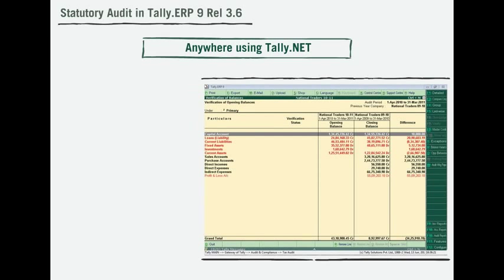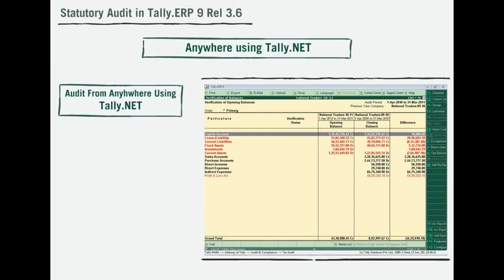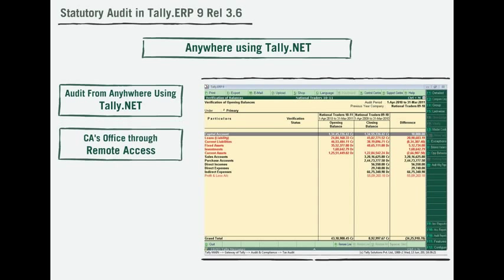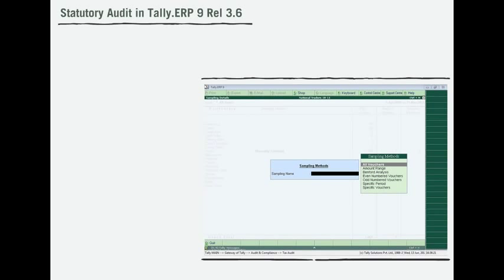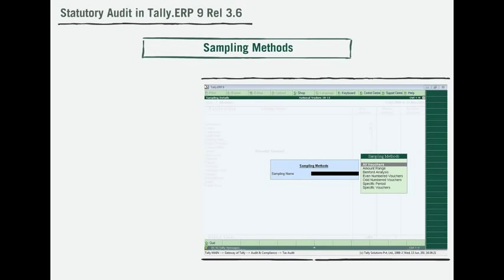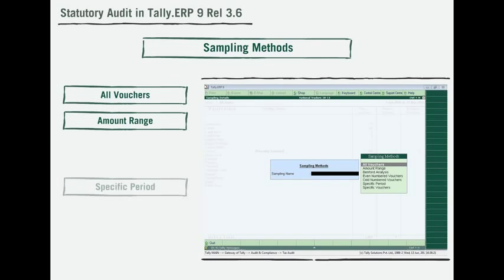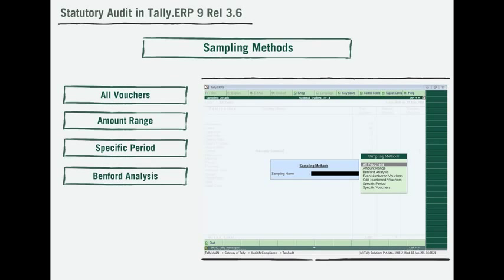Apart from auditing the client's data from your office, the CA can now audit from anywhere using Tally.Net. This includes auditing from the CA's office through remote access of client's data or at the client's office itself.